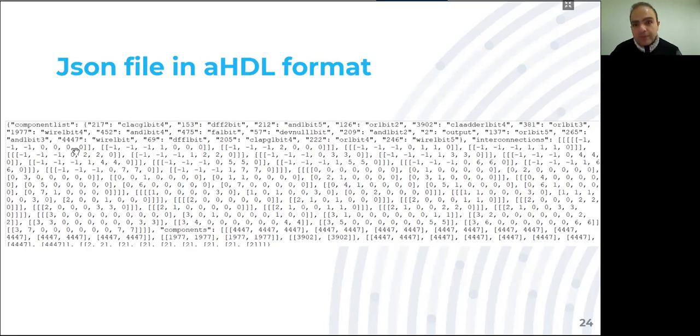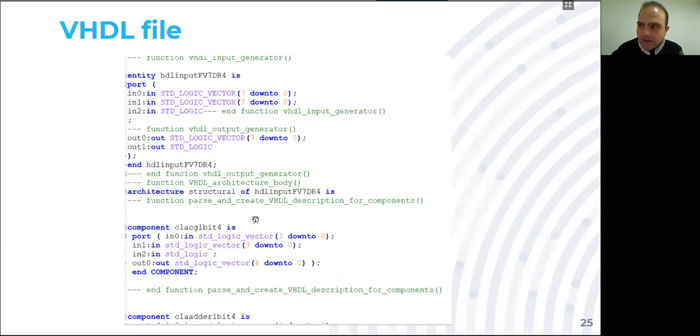The JSON file format of HDL, it's an array of embedded arrays that define all components. Every component has a random ID, which is then followed by the interconnection table that connects every component with every other component. This is an array that is generated automatically, you don't have to write stuff like this.